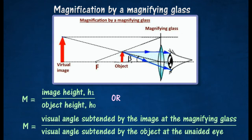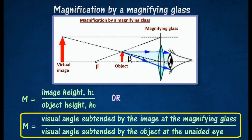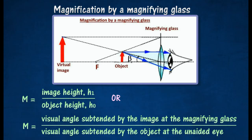The magnification M of a magnifying glass can be determined by using the image height to object height ratio, or the visual angle subtended by the image to visual angle subtended by the object ratio.